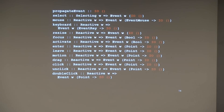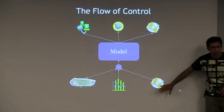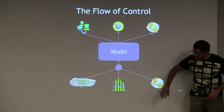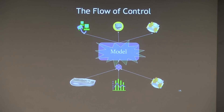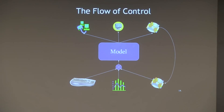The key problem is that the flow of control is all backward. Some event happens — disk response, keyboard, stock ticker — it comes through the model of the program and has to propagate to all the views, which can cause additional control flow. The world is in charge, not the program. When we write reactive systems we have to rethink how we design our APIs and our languages.